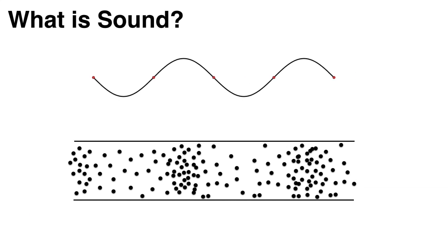Another way of presenting this is that the low points on the sine wave are where air particles are spread far apart, and the high points on the sine wave are where air particles are bunched together.